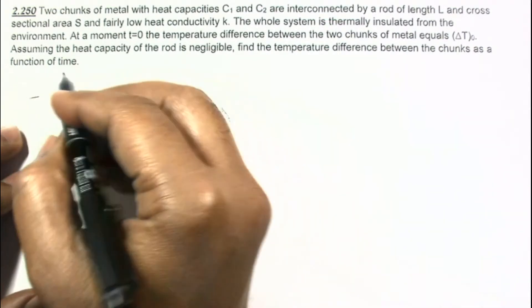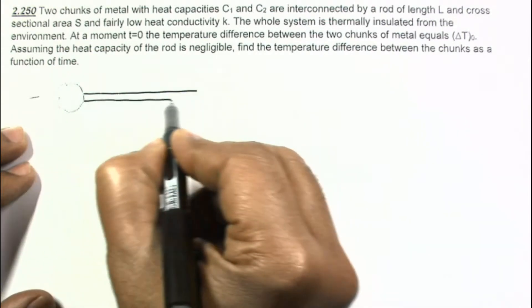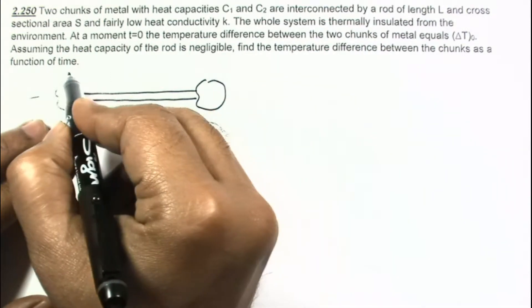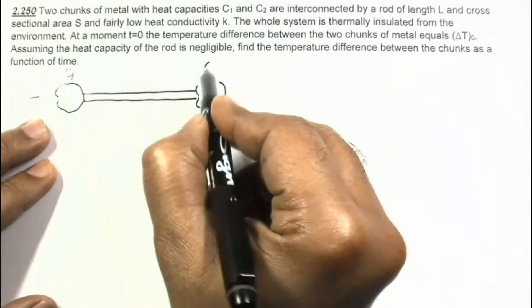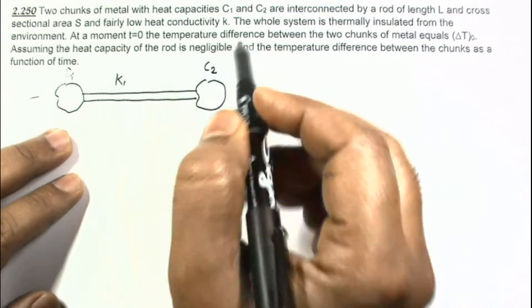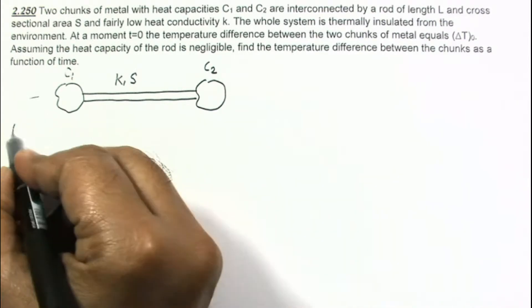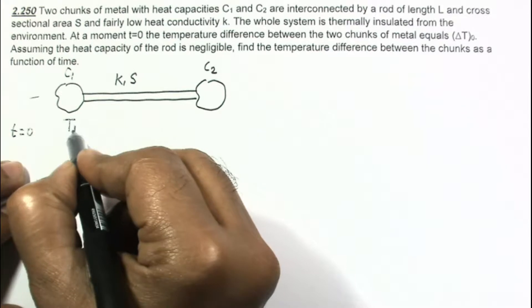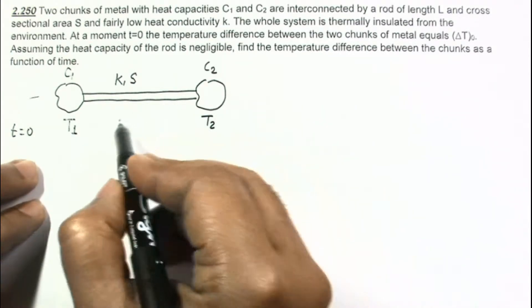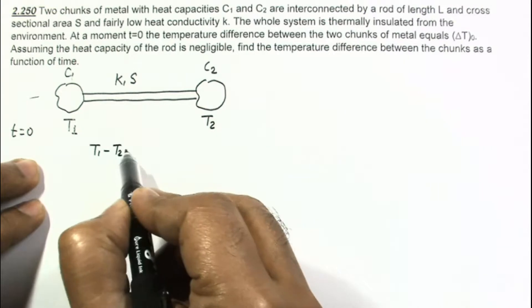Let us make the diagram. Suppose these are two metallic chunks connected by this rod. The heat capacity of one chunk is C1 and the other is C2. Thermal conductivity of the rod is K and cross-sectional area is S. At T equal to zero, the temperature of one chunk is T1 and the other is T2, with T1 greater than T2. So at T equal to zero, T1 minus T2 equals delta T0.